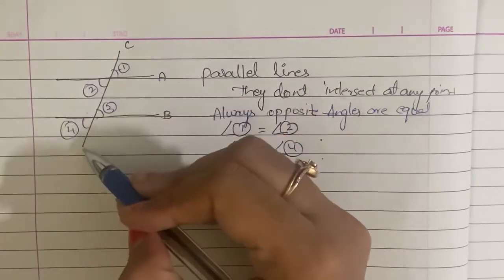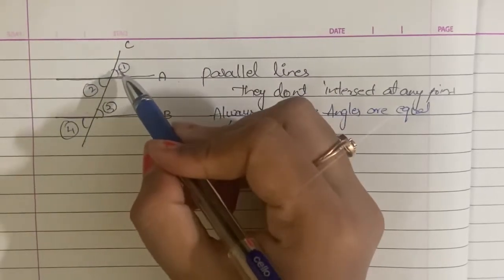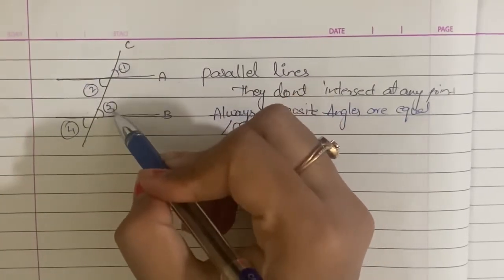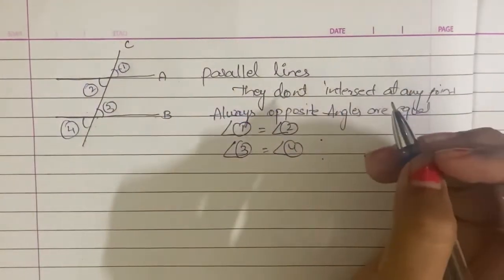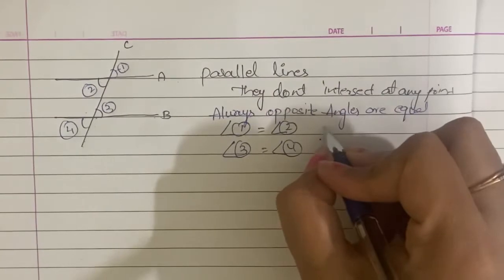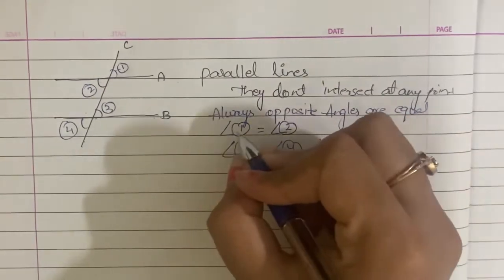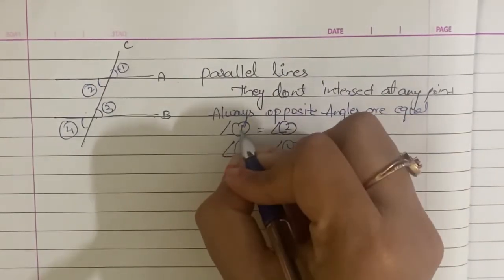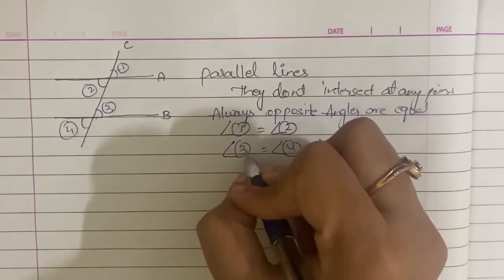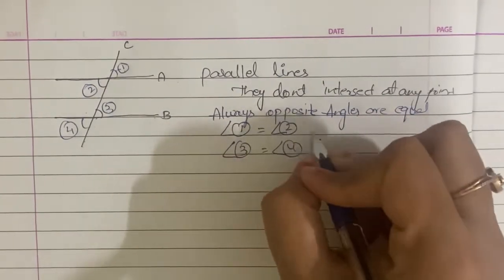when two parallel lines intersect, Angle 1 will be equal to Angle 3. So Angle 1 is equal to Angle 3, and Angle 2 is equal to Angle 4.